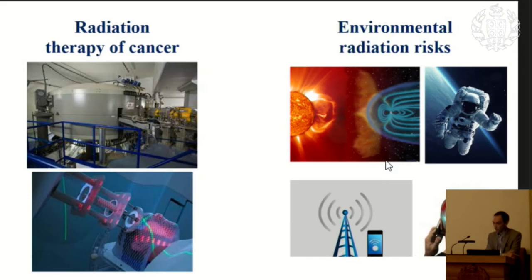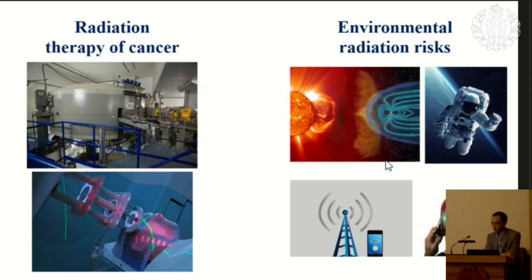Why am I speaking about the brain? Because many years ago, when radiation research started — especially on biological organisms — the brain was considered the most probably radio-resistant system, and nothing was feared about its damage. But there have been warning signals.